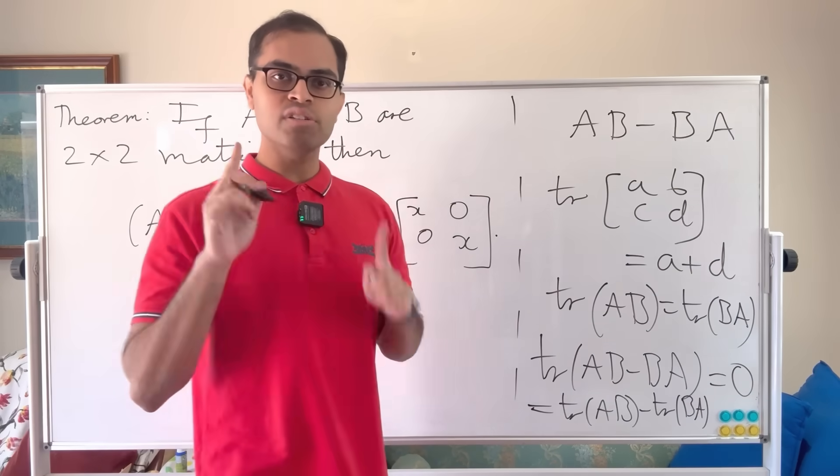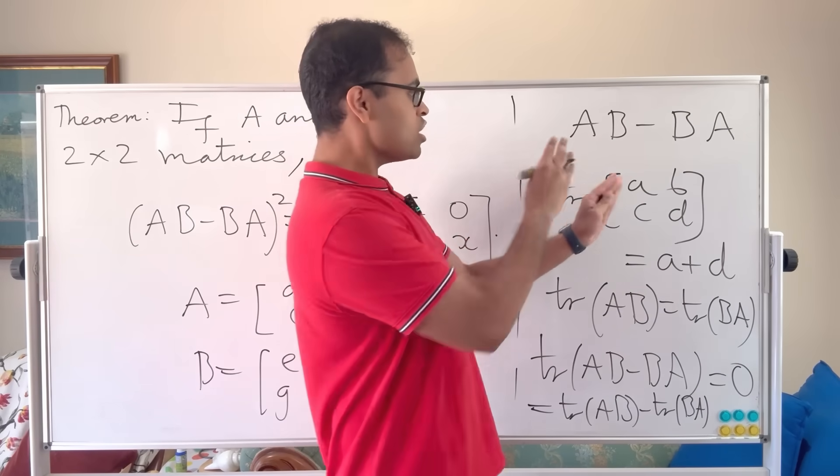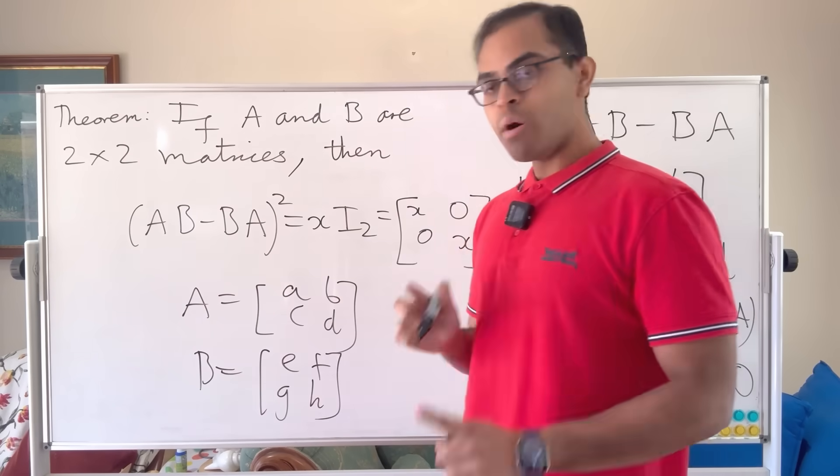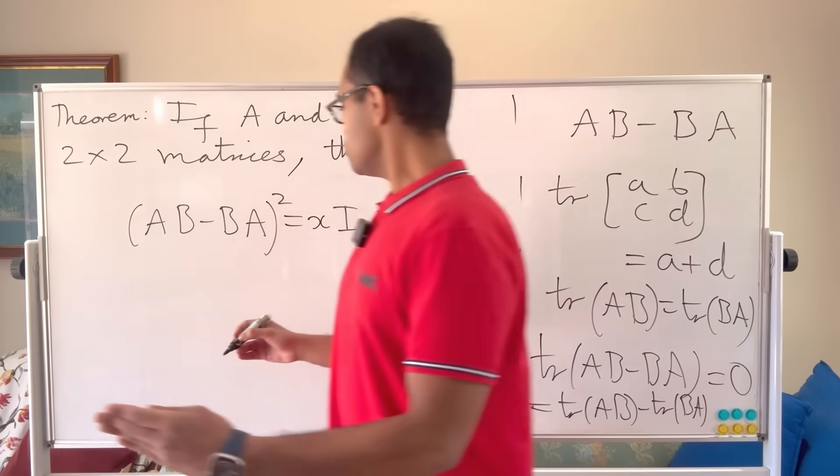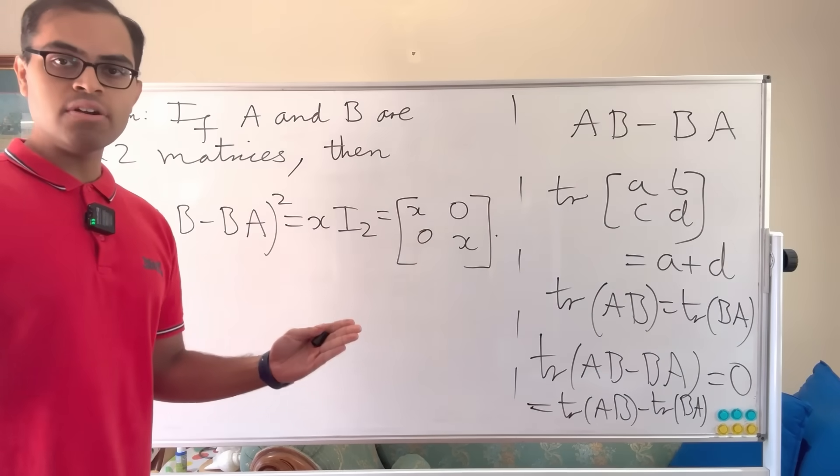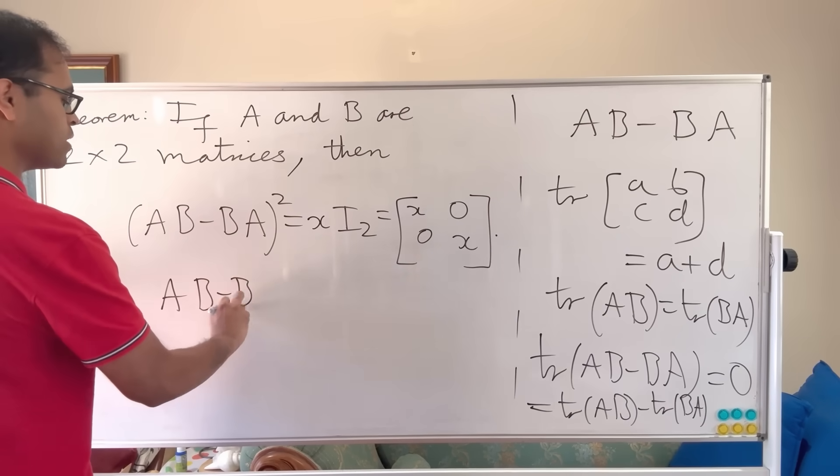Why is this special? Because we're going to get a deep understanding of AB minus BA. Doesn't matter what A and B are. We're just going to be able to say something about that. And what we're going to be able to say, I'm going to write on this side of the board, what we can say is that the trace of AB minus BA is 0, as I just said. So we can write AB minus BA in a very special way.